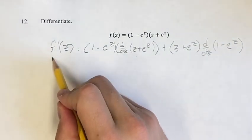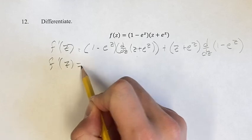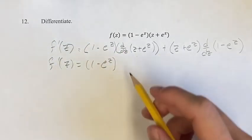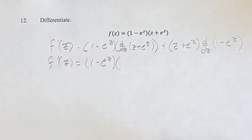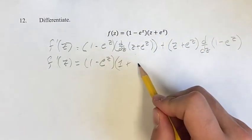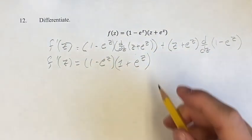Now we just simplify this. First, we calculate the derivatives. So keeping this the same, then we have the derivative of z. z is a linear term, so its derivative is just its coefficient, which is 1, plus the derivative of e to the z is just e to the z. Always good to keep that in mind.